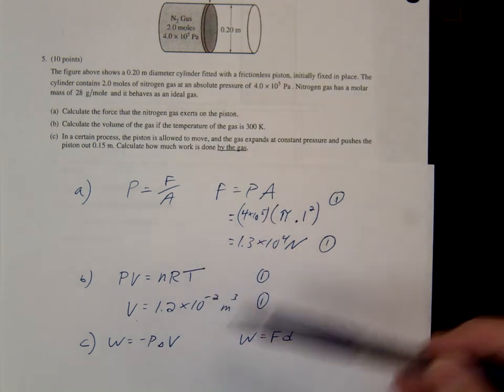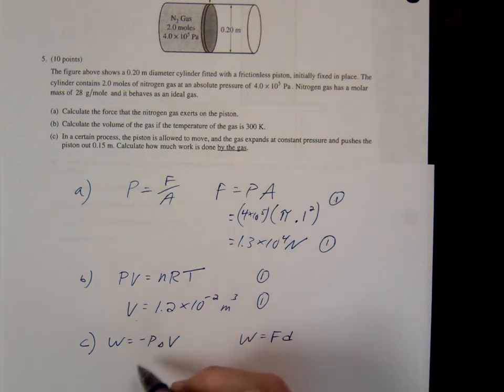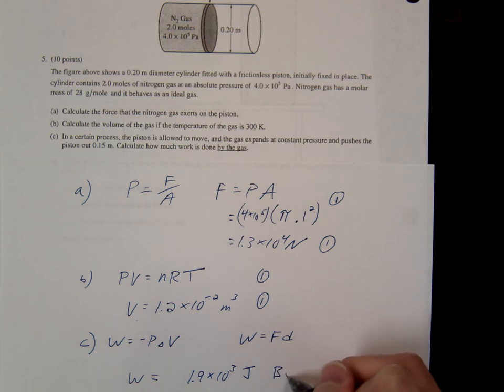In the context of these types of problems, most of the time, you're going to probably be using this, P delta V, when you solve for it. But either way, it should be fine. What's the answer? Work equals 1.9 times 10 to the third joules by the system.